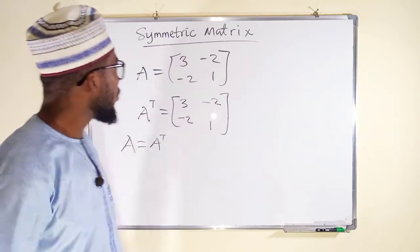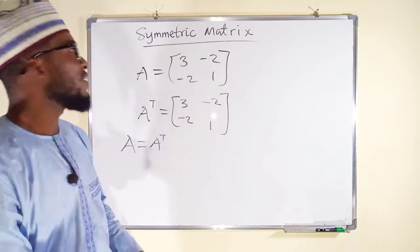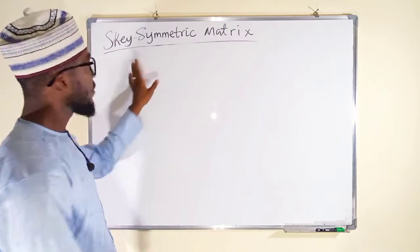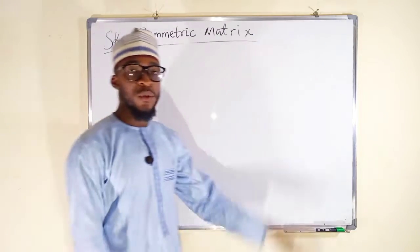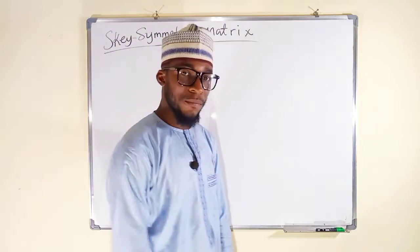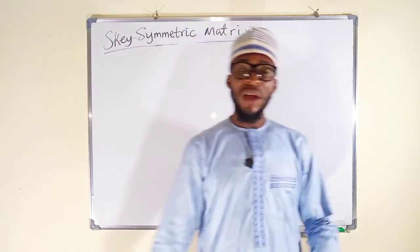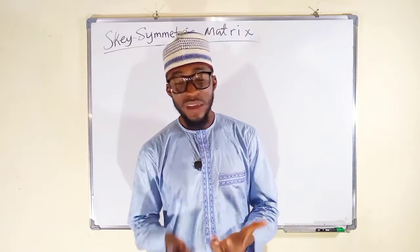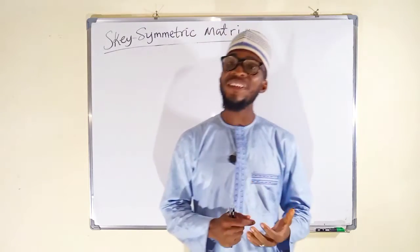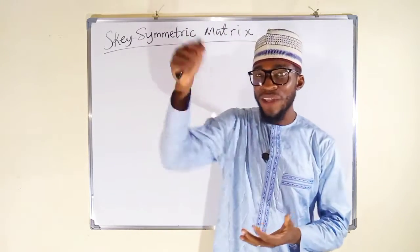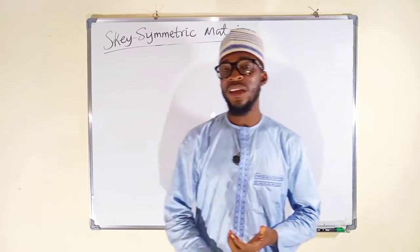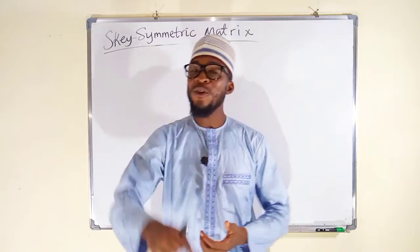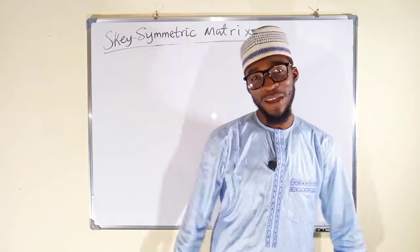Let us take the last one, which is the Skew Symmetric matrix. A matrix is said to be skew symmetric if and only if the transpose of that matrix is equal to minus the initial matrix.